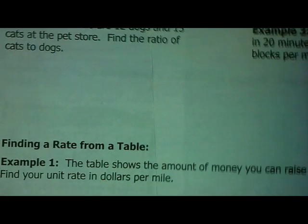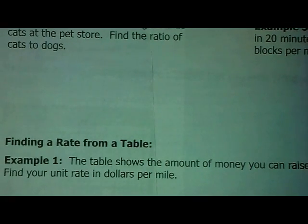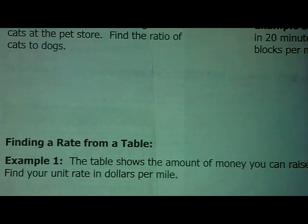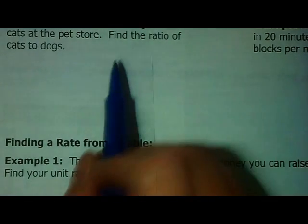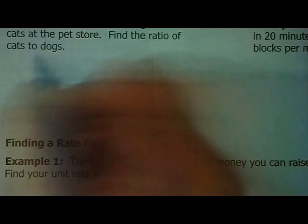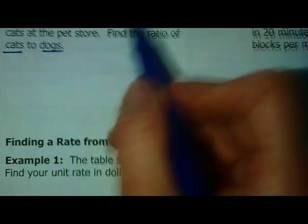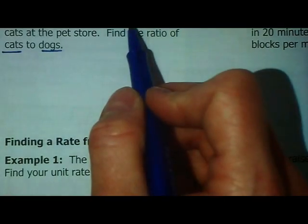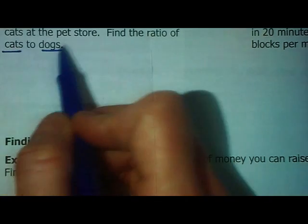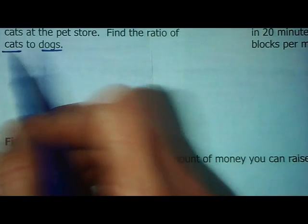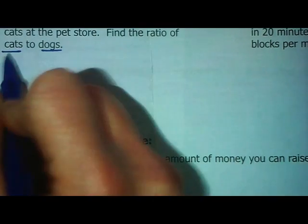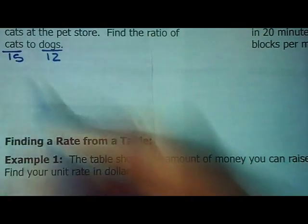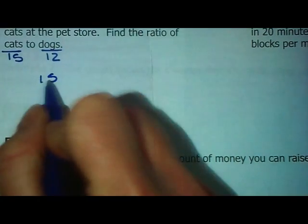Another example. There are 12 dogs and 15 cats at the pet store. I hope not all together. That would be a rumble. Find the ratio of cats to dogs. Now, this is important. It says cats to dogs. Up here, they're trying to mess you up. Because they tell you dogs first and then cats. But, here it says cats to dogs. So, make sure you have the right numbers where they're supposed to go. There are 15 cats, 12 dogs. Cats get to go first. And, again, I'm going to use the fraction form because that's my favorite.